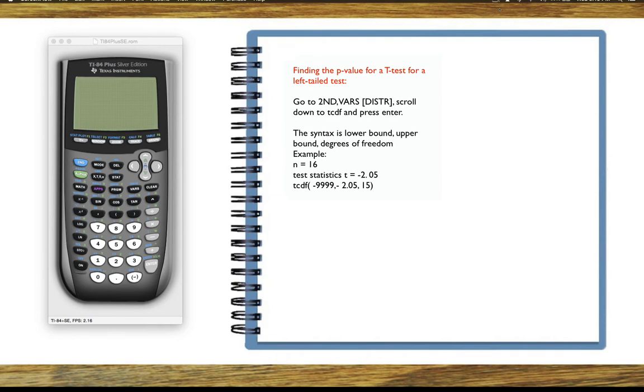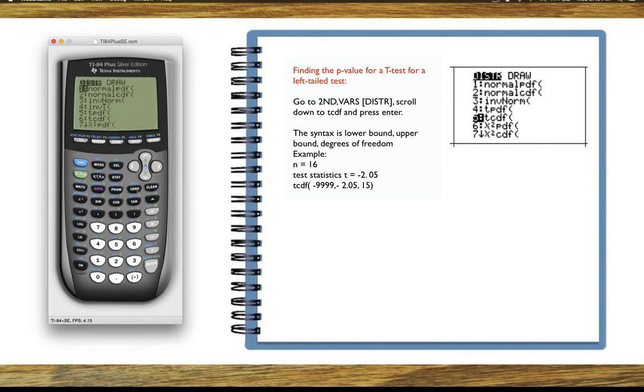This p-value is found in a similar way to when we found the area with z-scores. We're using 2nd VARS, 2nd DISTR, the menu comes up and we scroll down to number 6, which is tcdf, and press enter.